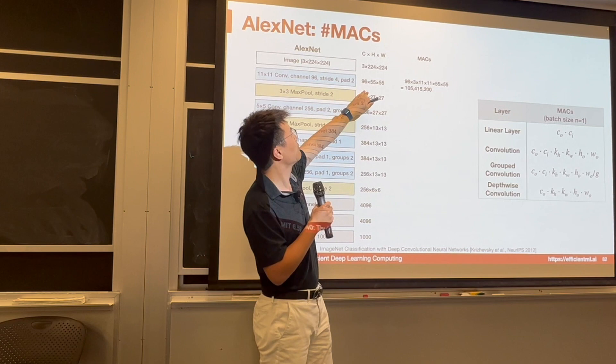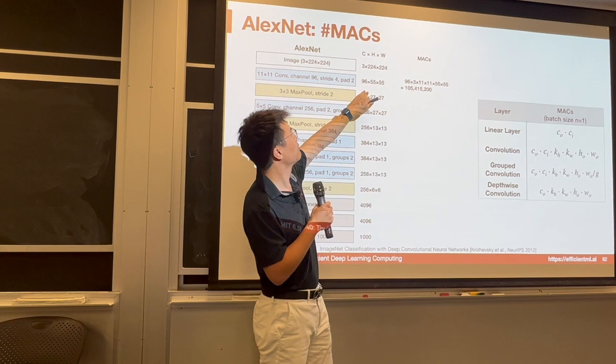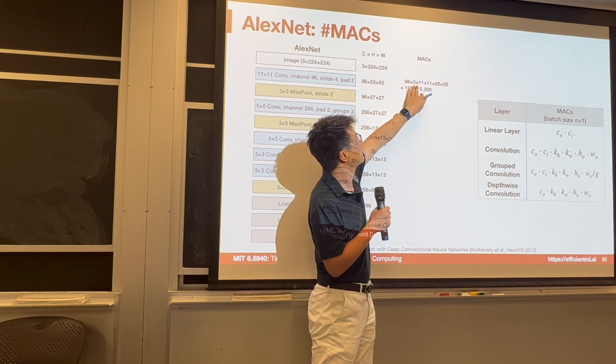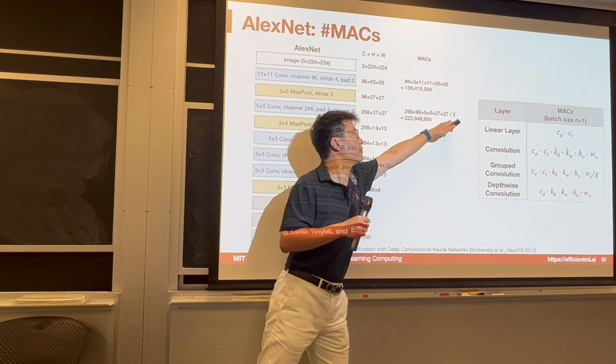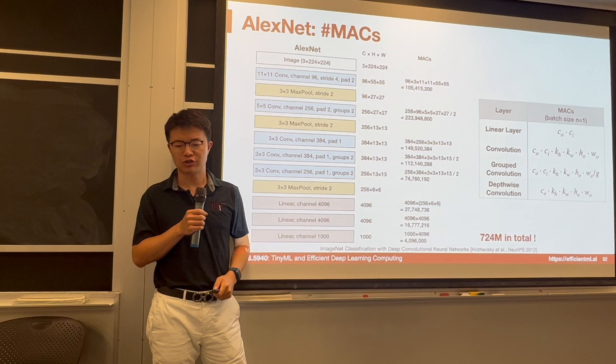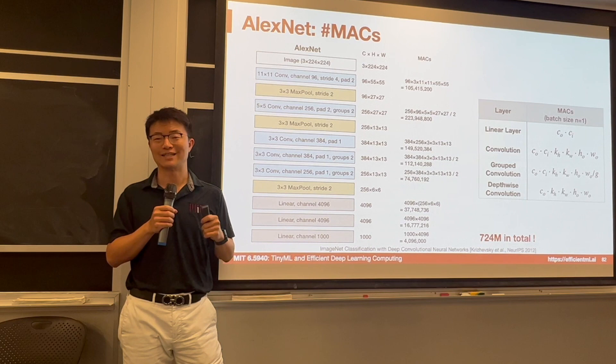For AlexNet, the first layer has output dimension 55×55, kernel size 11×11, 3 input channels, 96 output channels — multiply these six terms together. The second layer uses group 2, so divide by 2. For fully connected layers, just two terms: Cin × Cout. This way, you can quickly identify which layers consume the most compute.